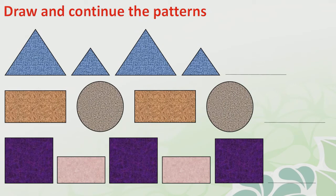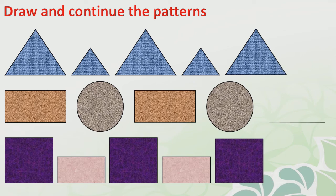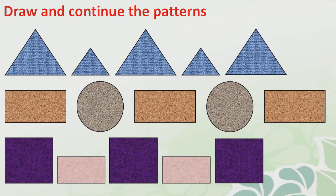Draw and continue the patterns. You can see here big triangle, then small triangle, big triangle, then small triangle. So after small triangle, which are we going to draw? That is big triangle. Next one: rectangle, circle, rectangle, circle — which one is going to be next? After circle, that is rectangle. Now third one: square, then rectangle, square, rectangle, square — which shape will you draw next? After square, that is rectangle.